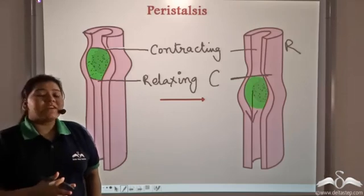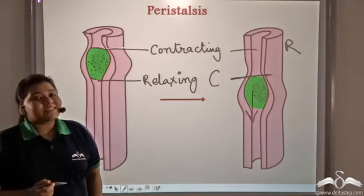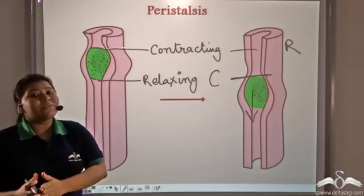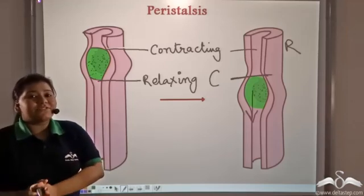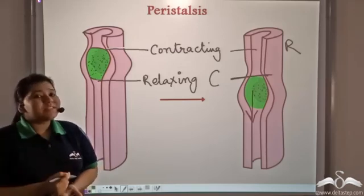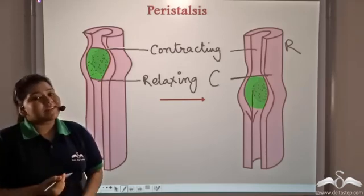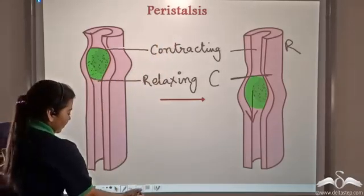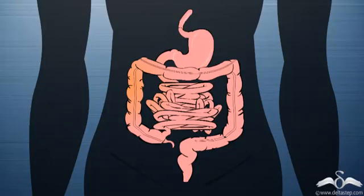So we see there is relaxation before and after contraction of muscles. This alternating contraction and relaxation of muscles that goes on continuously in the digestive tract and pushes the food downwards is known as peristalsis. It takes place in the entire digestive system and facilitates the movement of food particles.